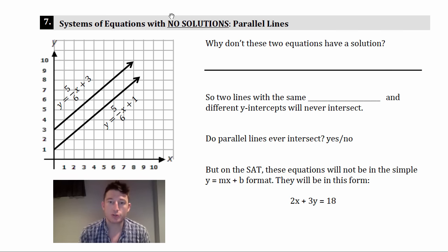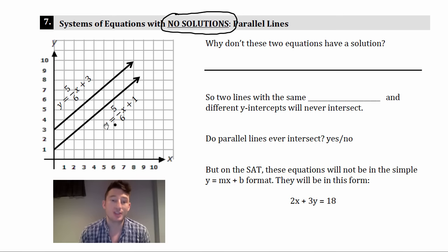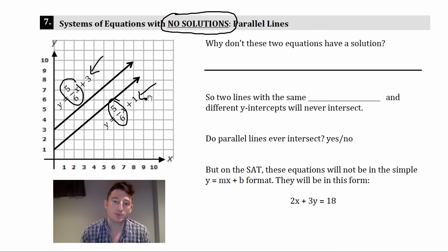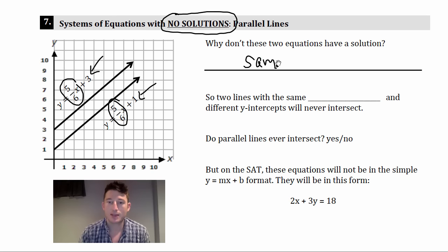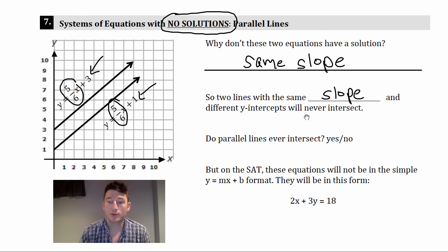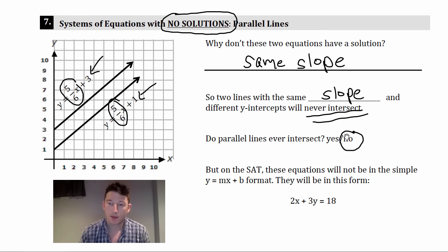How do you know a system has no solutions? The answer is when they are parallel lines. You can see here two lines that extend infinitely and never intersect — they're going to have the same slope. This one's 5/6 x and this one's 5/6 x. The difference is in the y-intercepts. Two lines with the same slope and different y-intercepts never intersect.